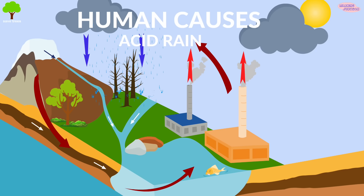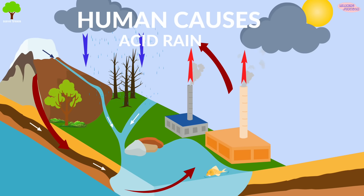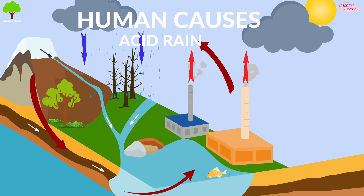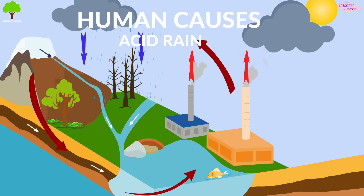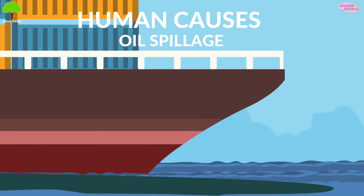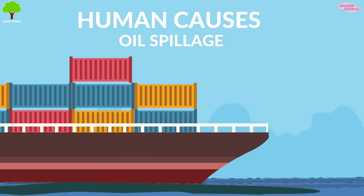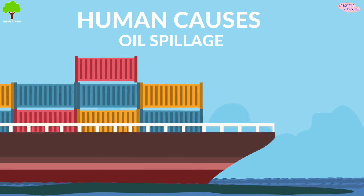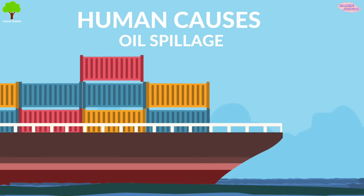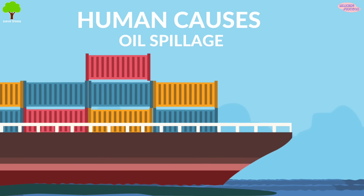Acid rain. Acid rain can turn lakes acidic and it kills fish and other animals. Oil spillage. Oil spills generally happen in the ocean and cause many devastating effects to animals, plants, and humans.